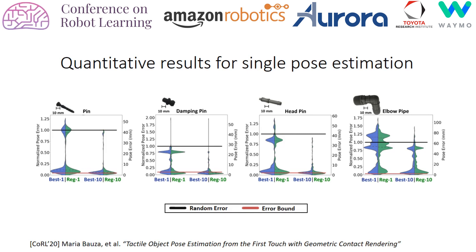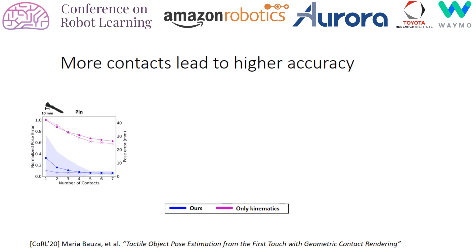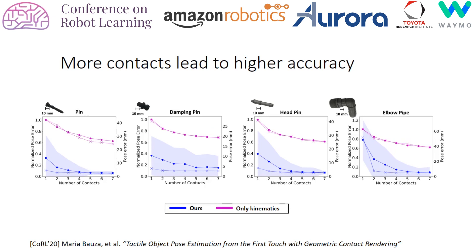We also show results for multiple contacts. If you only consider the kinematics of the sensors, you do not see much improvement. But if you also take into account the contact shapes, then the more contacts you have, the more information you gain, and that is enough to clearly reduce the error. We compute results for four objects, and you can clearly see that with our approach, adding multiple contacts has a clear effect on pose estimation.